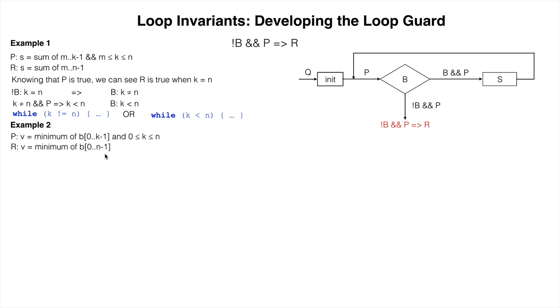Just as in the last example, knowing P is true, we can see that R is true when K equals N. This gives us the same result for not B, and thus the same loop condition, B, as well.